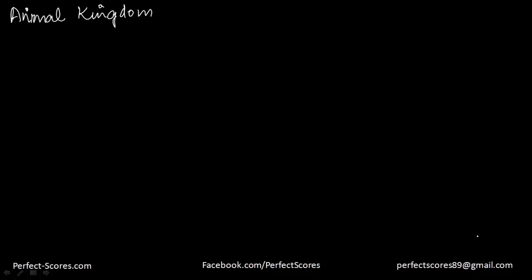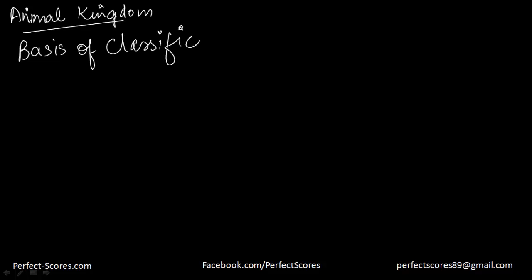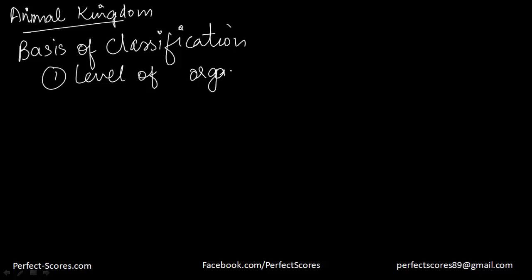Coming to the animal kingdom, which is a really vast kingdom — over a million species of animals have been documented till now. How is this classification done? There are lots of bases to classify the animals. The first one being the level of organization — how much or to what extent the organism is organized — that is the first factor people usually look at when they want to classify.